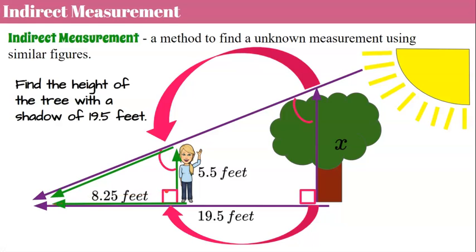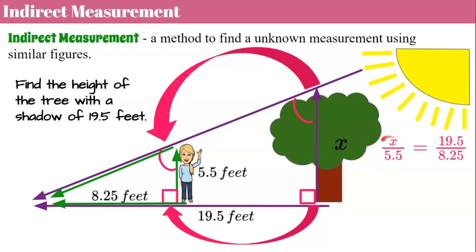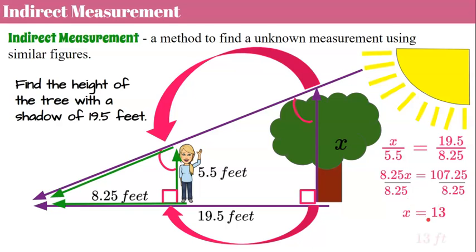Since corresponding angles are congruent, I have two pairs of congruent corresponding angles — angle-angle similarity — so these are similar triangles and their corresponding sides are proportional. x corresponds to five and a half feet, and the tree's shadow of 19.5 feet corresponds to my shadow of 8.25 feet. Using cross product property, 8.25x equals 5.5 times 19.5. Dividing both sides by 8.25, we get x equals 13. This tree is 13 feet tall — without ever measuring it directly. I only needed my height and the lengths of both shadows.